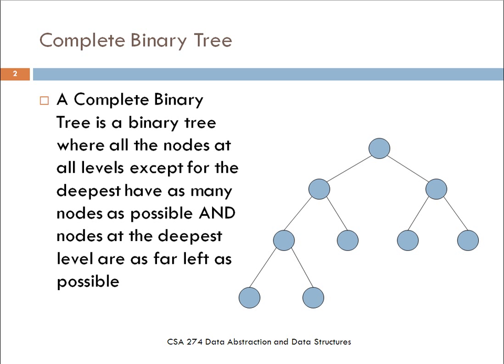As it says here, it's a binary tree where all nodes at all levels, except for the deepest, have as many nodes as possible, and the nodes at the deepest level are as far left as possible. So we have a picture here of what would be considered a complete binary tree.